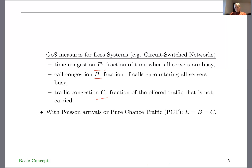When are E and B not equal? When the number of subscribers is small compared to the number of servers, E is not equal to B — I will discuss that later in the context of loss systems. And when would traffic congestion C differ from time congestion E? That is when the capacity requirement for calls are different. For example, a video call normally requires higher capacity, so a video call is more likely to be declined due to insufficient capacity, meaning C may not equal E when there are different capacity requirements per call.